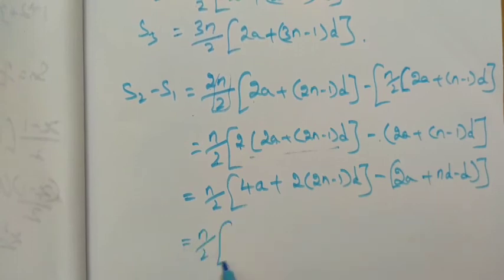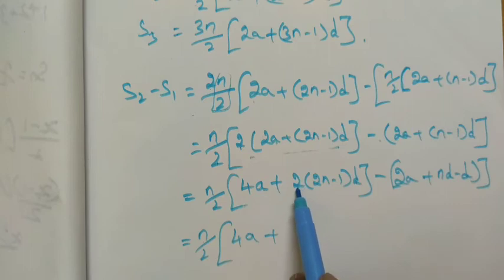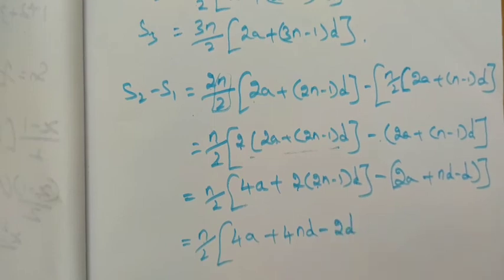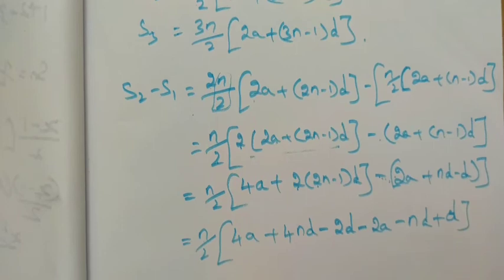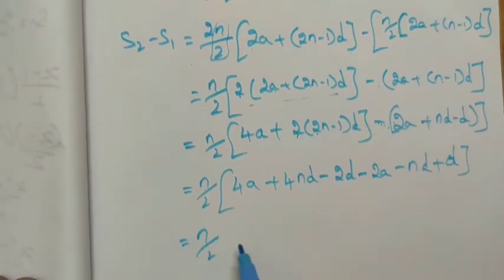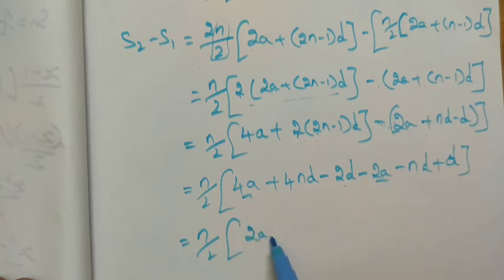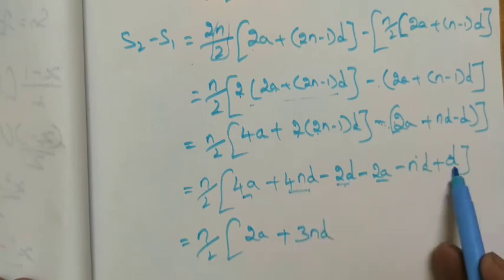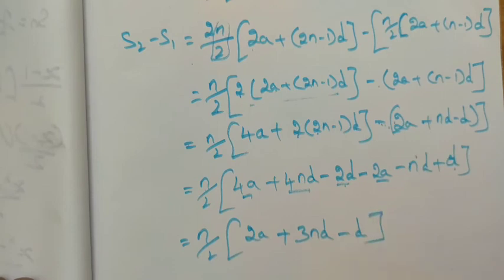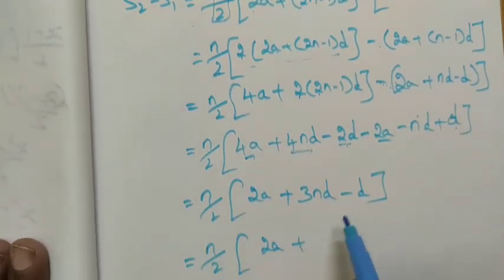Divide by 2: 4a + 2d, 2d minus... Removing brackets, simplifying. We get n/2[2a + (3n-1)d]. This is S₂ minus S₁.